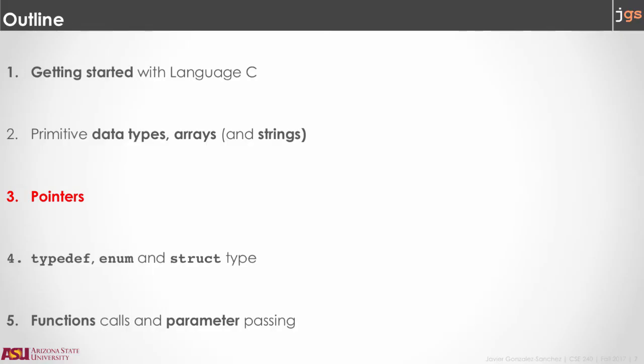So, in the rest of this video, I'm going to review what you need to get started with C. Then, in another video, I'm going to talk about primitive data types, arrays, and strings. Then we're going to review pointers. Then type def, enum, and struct. And we're going to end it with reviewing function calls and parameters in C. Let's start.